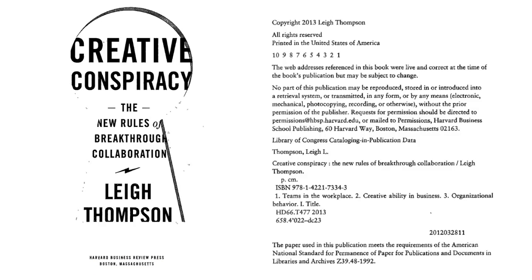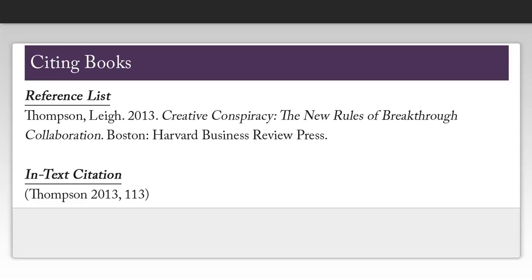Sometimes you will have more than one publishing city, and if that's the case, you'll just take the first one to use in your citation. The only element we're not finding on this page is the date of publication. So what we can do is go to the copyright page and see that it was published in 2013. Now that we've found all the information we need, we can create our citation.